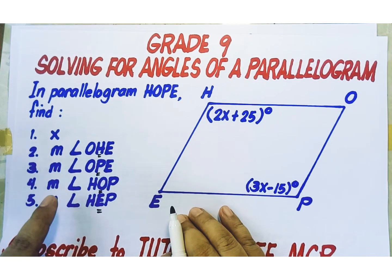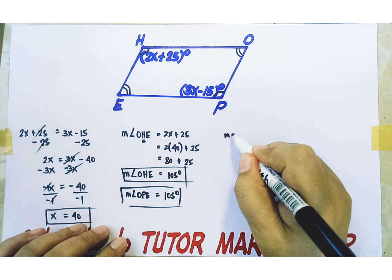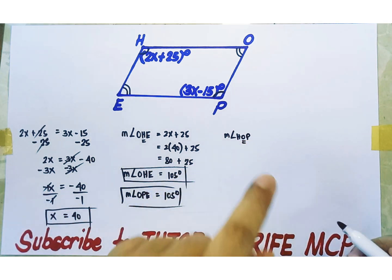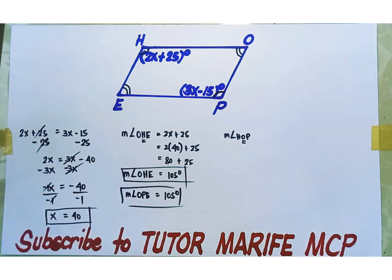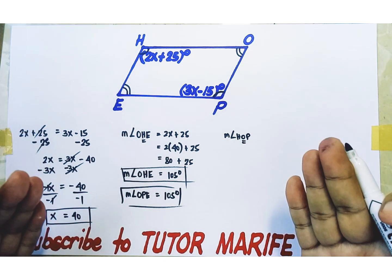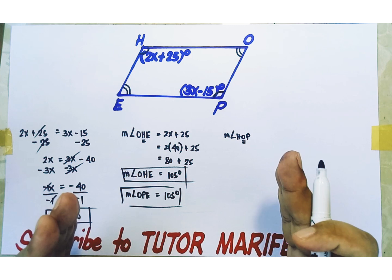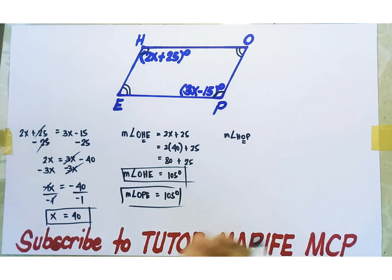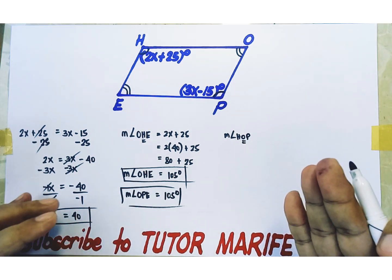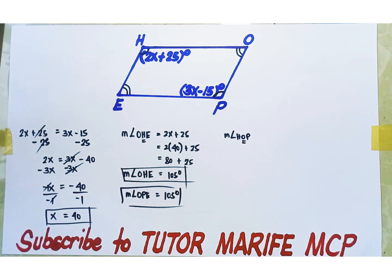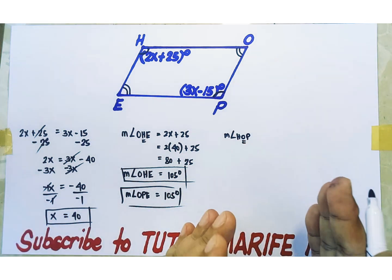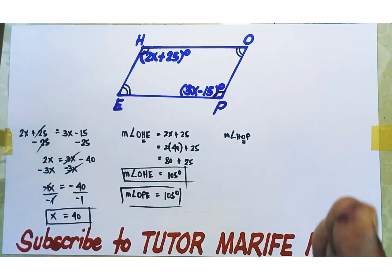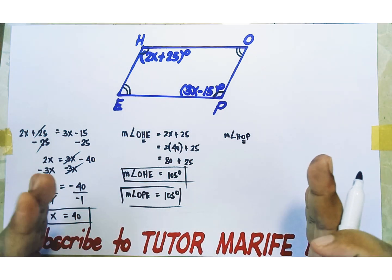Let's proceed to number 4: find the measure of angle HOP. The middle letter is O, so O is the vertex of the angle. Angle HOP is the same as angle O. We are going to use another property of a parallelogram stating that the consecutive angles of a parallelogram are supplementary. When we say supplementary, they add up to 180 degrees. Let's define consecutive angles of a parallelogram. The consecutive angles of a parallelogram are angles that are next to each other — they are adjacent, they share a common side. In any parallelogram, you would always have four pairs of consecutive angles.